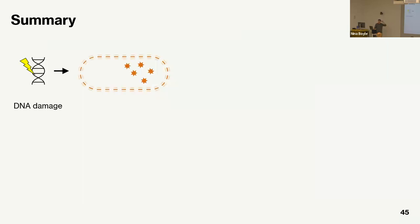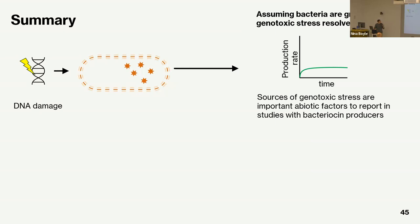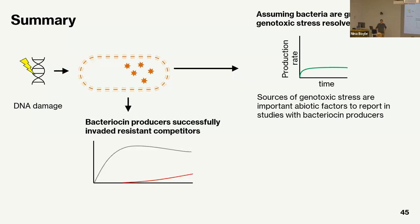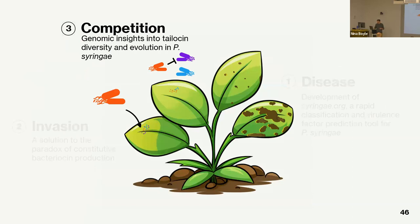Overall, adding explicit damage-induced production to the bacteriocin model kind of solves this paradox and suggests that genotoxic stress may be more common than we think. We should measure these abiotic factors in lab studies. Bacteriocin producers can successfully invade versus competitors under this model, suggesting that lysis associated with bacteriocin production may not be as much of a fitness cost as we think — it might in fact be a benefit.